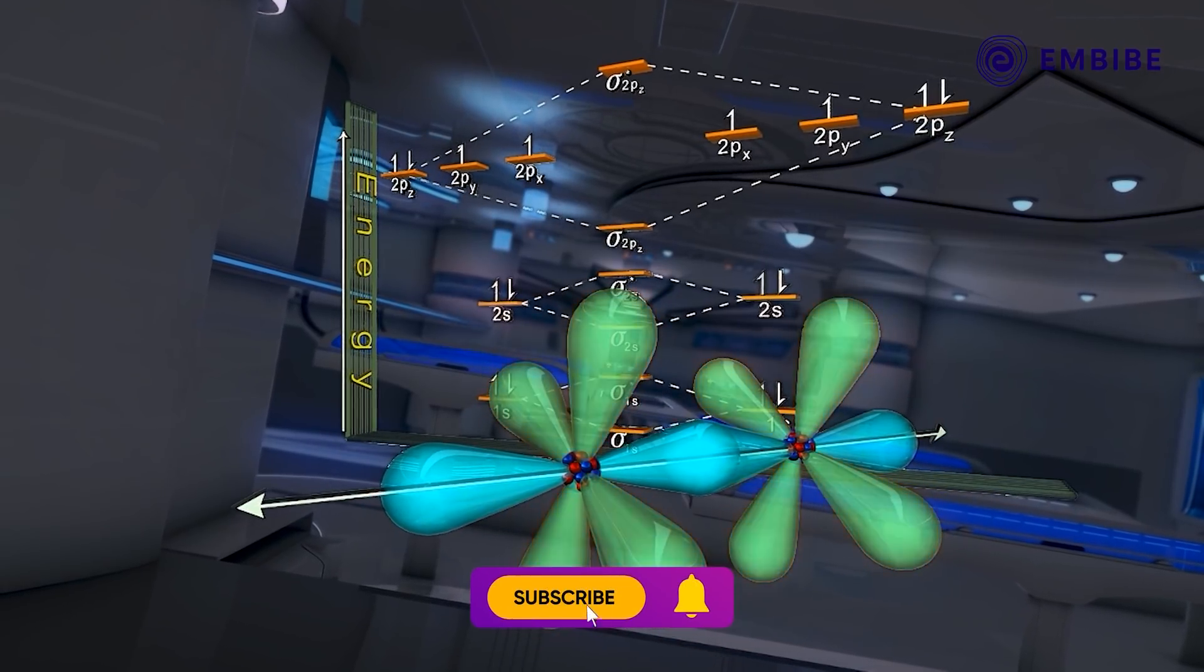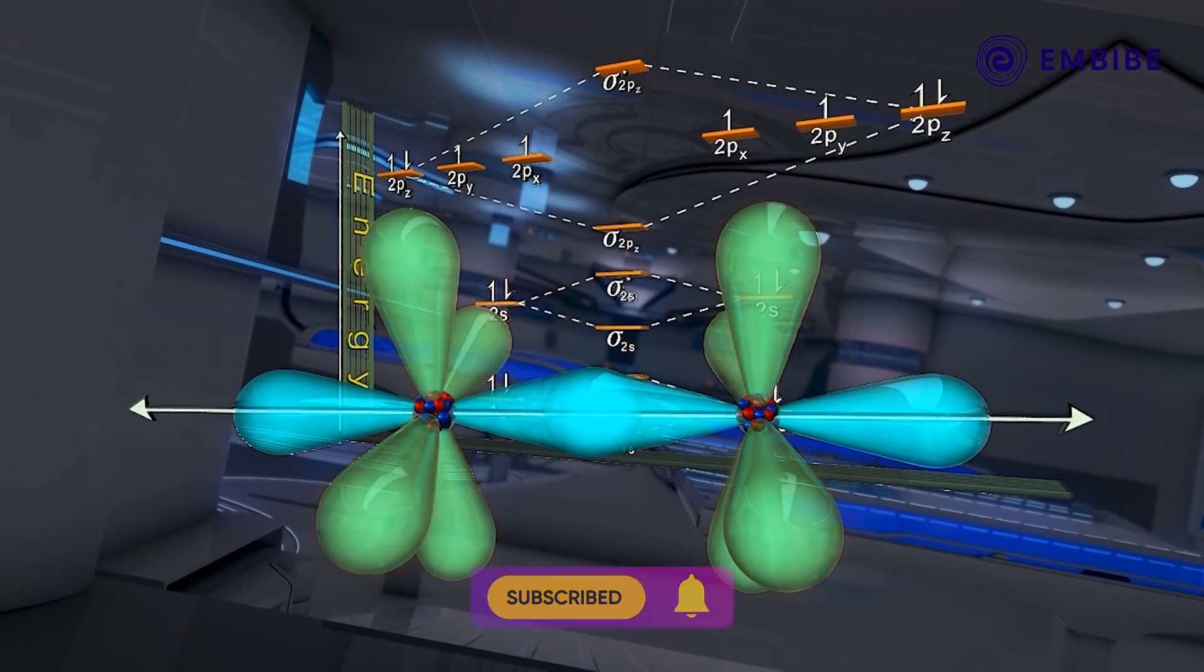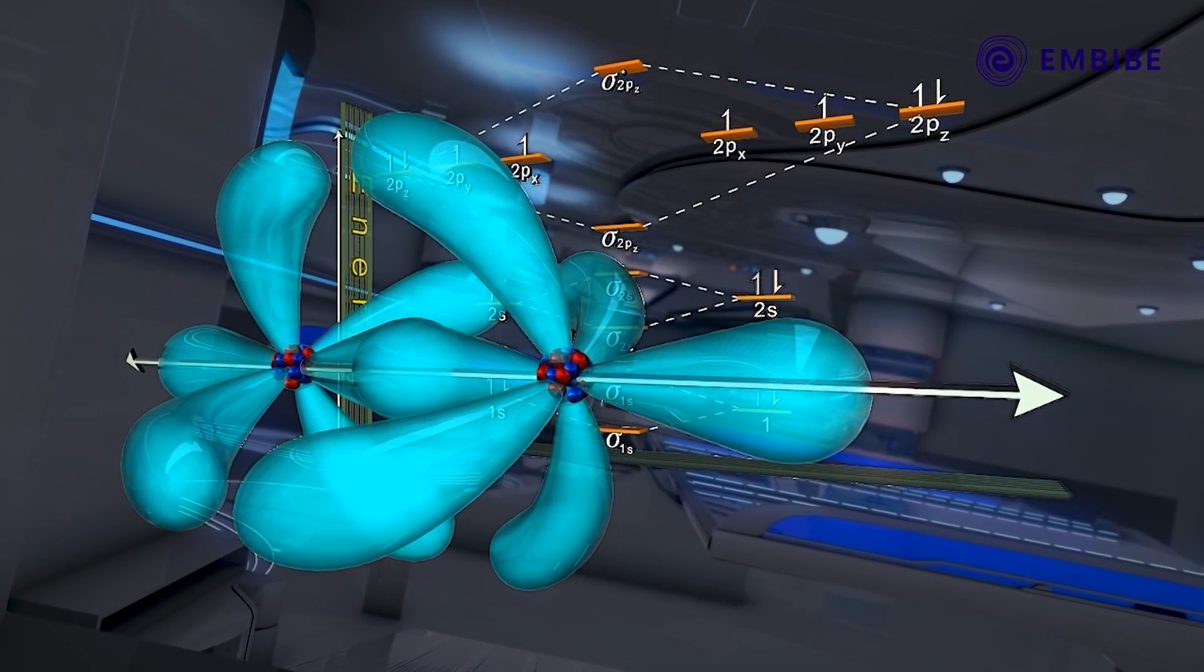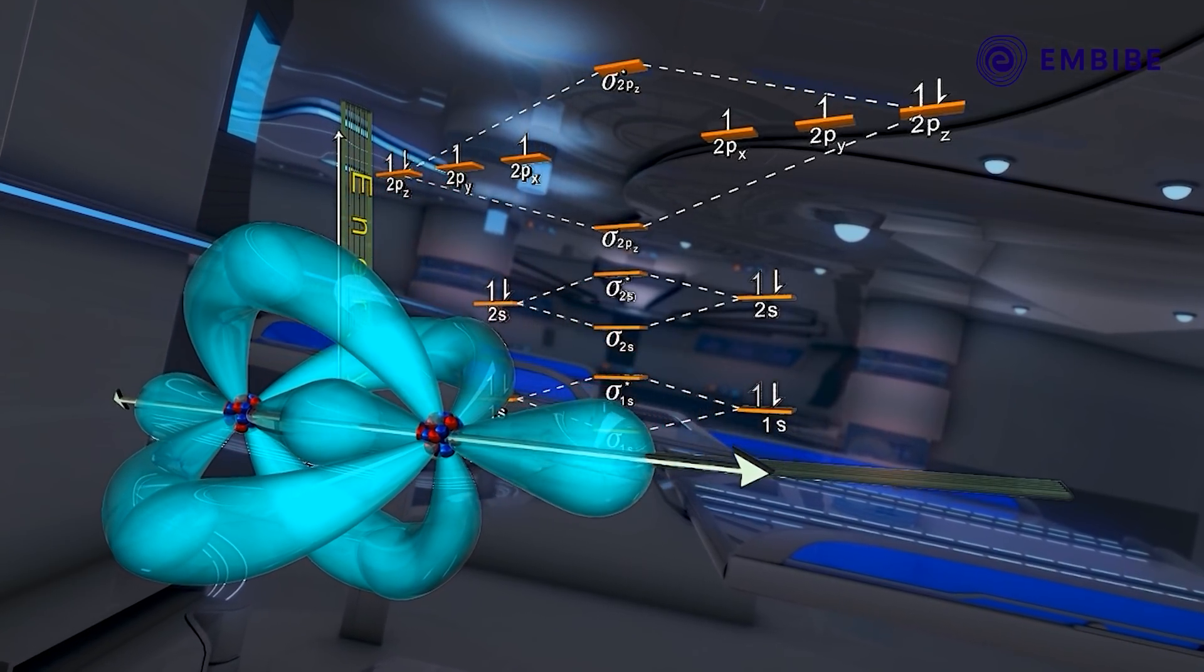Simultaneously, the other 2p orbitals which lie perpendicular to the 2pz overlap sideways. This sideways overlap of atomic orbitals results in π molecular orbitals.